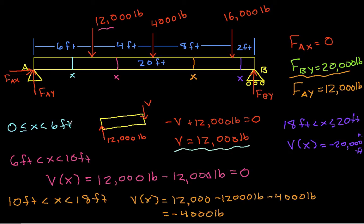So what we have then is that between 0 and 6 feet, V(X) has this value. Between 6 and 10 feet, it has this value of 0. Between 10 and 18 feet, it has this value, and between 18 and 20 feet, it has this value.